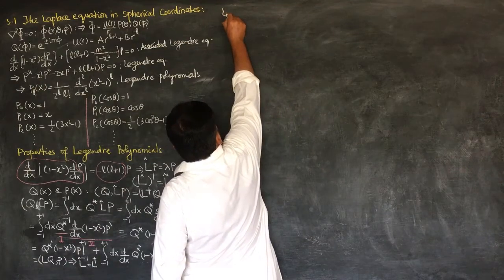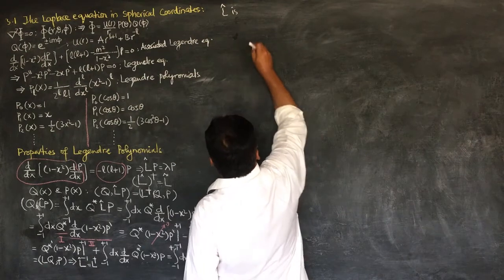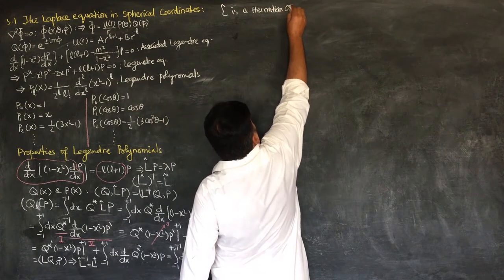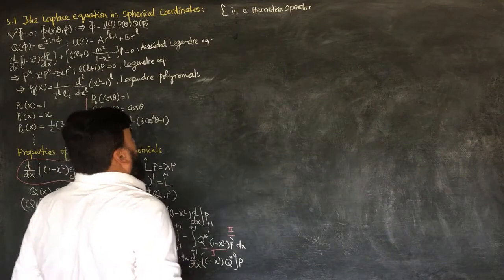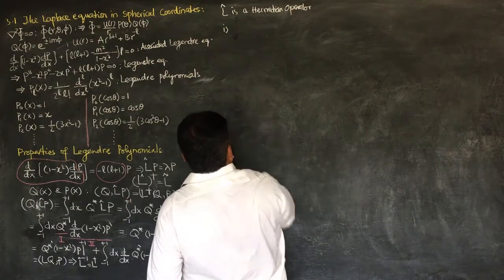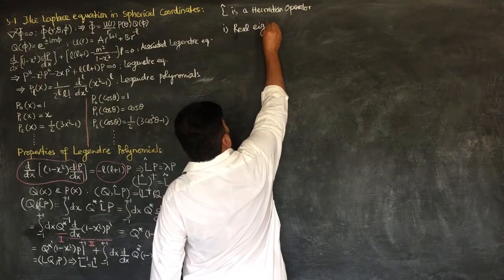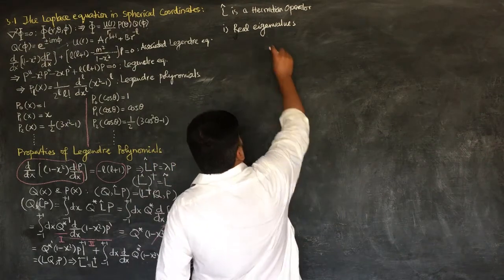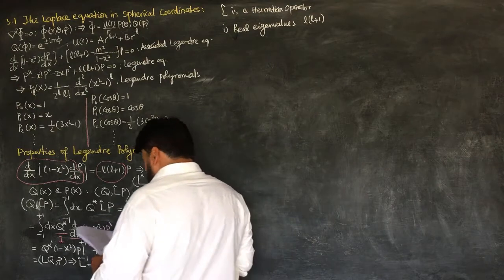The L operator is a self-adjoint, or Hermitian, operator. We know there are properties associated with an operator when it becomes Hermitian. When L is a Hermitian operator, it will have real eigenvalues. A Hermitian operator will always have real eigenvalues, and the eigenvalues associated with this Hermitian operator are L(L+1).